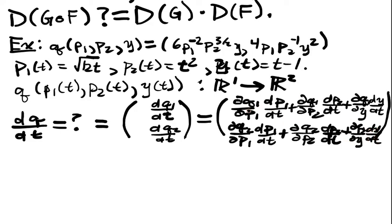But if we look at this, what are each of these components? Well, this would be the first row, the Jacobian of q, times the vector, the change vector, or the rate of change of the price and income vector. So if we write this out, we'll now expand it out.